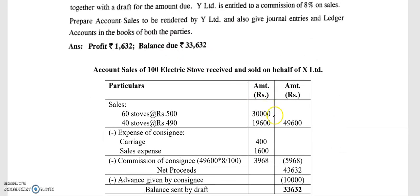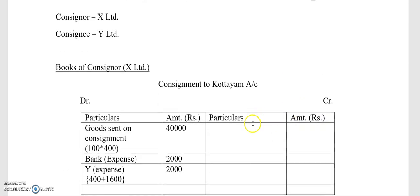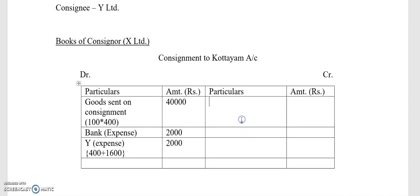The sales amount already presented in the account sales is ₹49,600. The debit side shows figures of ₹49,600 and ₹4,900. On the credit side, Y Limited's consignment account is recorded with sales amounting to ₹49,600.